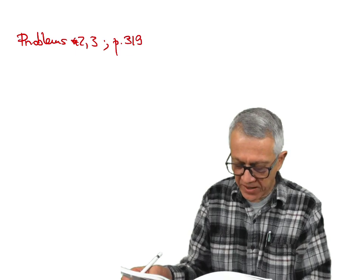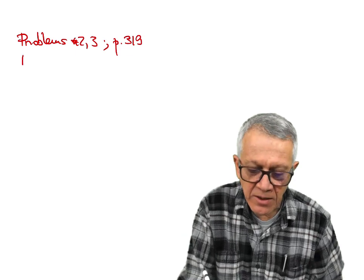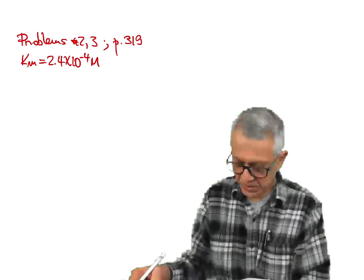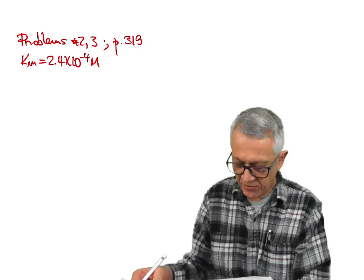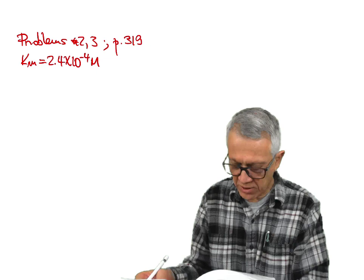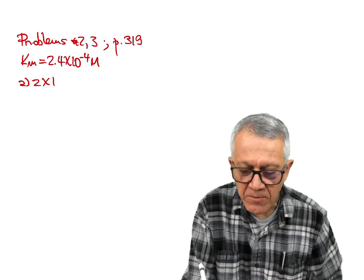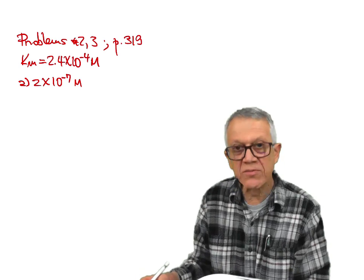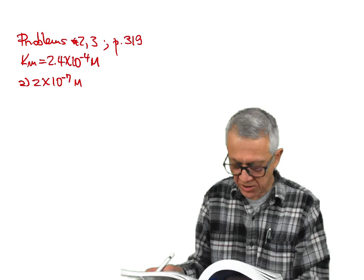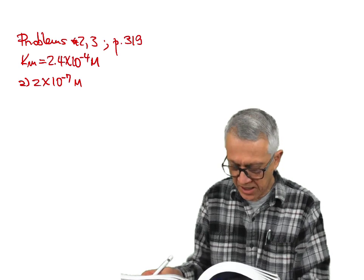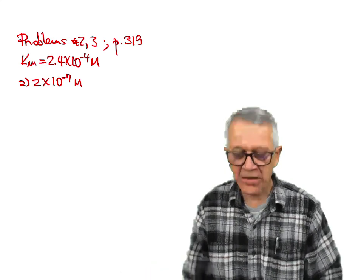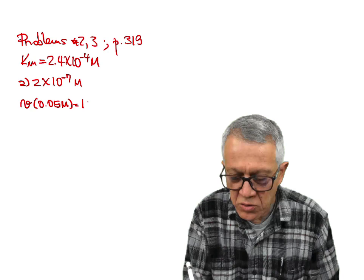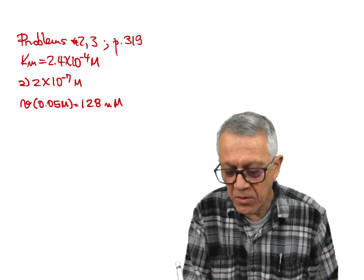The problem states that an enzyme with a Km of 2.4 times 10 to the power of negative 4 was assayed with the following substrate concentrations: A) 2 times 10 to the negative 7, B) 6.3 times 10 to the minus 5, and so on up to 0.05 molar. The velocity observed at 0.05 molar was 128 nanomoles per liter per minute.